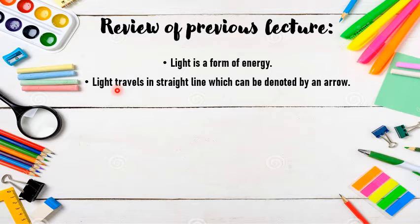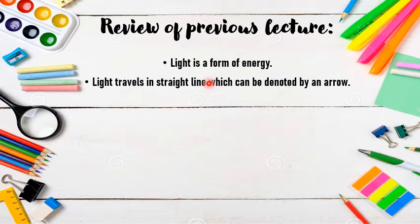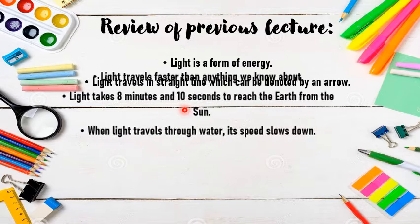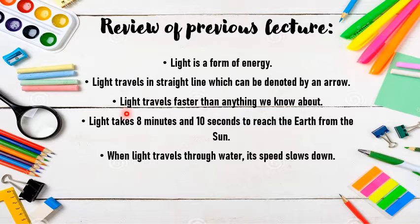We learnt that light travels in a straight line, which can be denoted by an arrow. An arrow can be drawn to show the direction of light. We also learnt that light travels faster than anything we know about. If we compare any thing in this world, light travels the fastest.